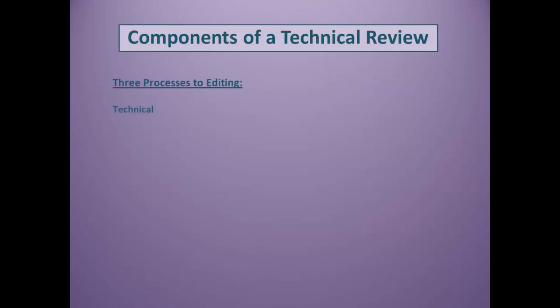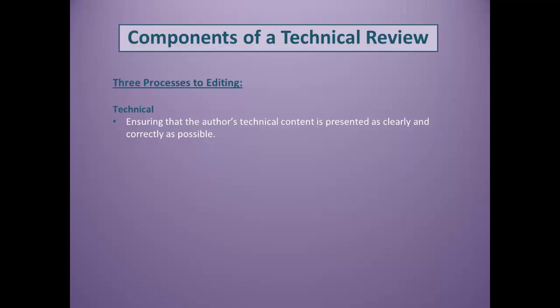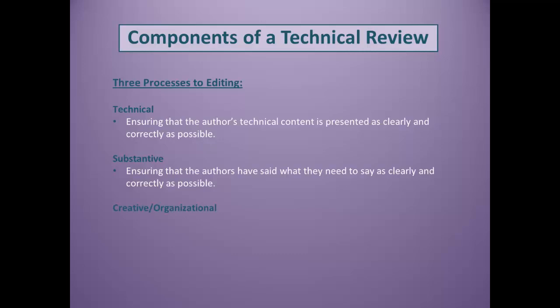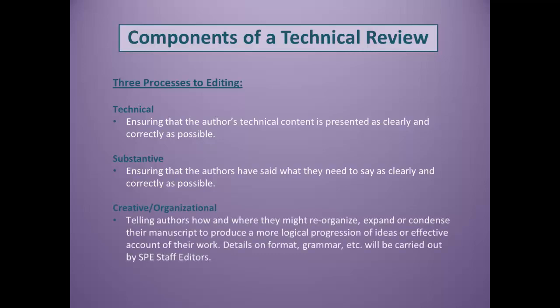Technical reviews have three components. First, they must be technical, ensuring that the author's technical content is presented as clearly and correctly as possible. Next, they must be substantive, ensuring that the authors have said what they need to say as clearly and correctly as possible. Finally, they should have a creative or organizational component, telling authors how and where they might reorganize, expand, or condense their manuscript to produce a more logical progression of ideas or a more effective account of their work.